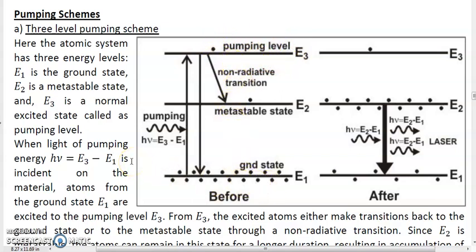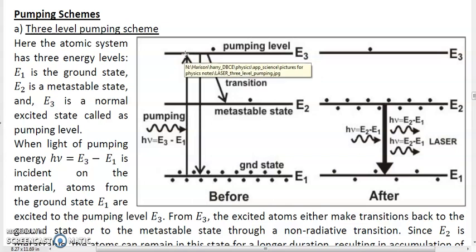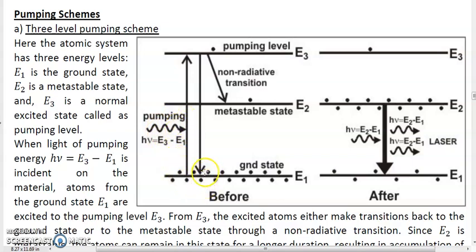Before we start pumping, the level E1 is highly populated since it is the ground state. Most atoms are initially in the ground state; any atoms in E2 or E3 are negligible. In pumping, we use optical pumping — supplying energy in the form of photons. We cannot take atoms directly from E1 to E2, because transitions from the ground state to a metastable state are not possible optically. So through pumping, we take atoms from the ground state E1 and put them into the pumping level E3.